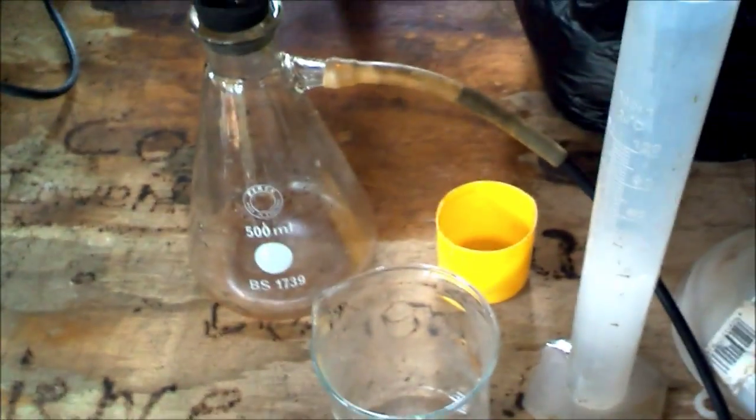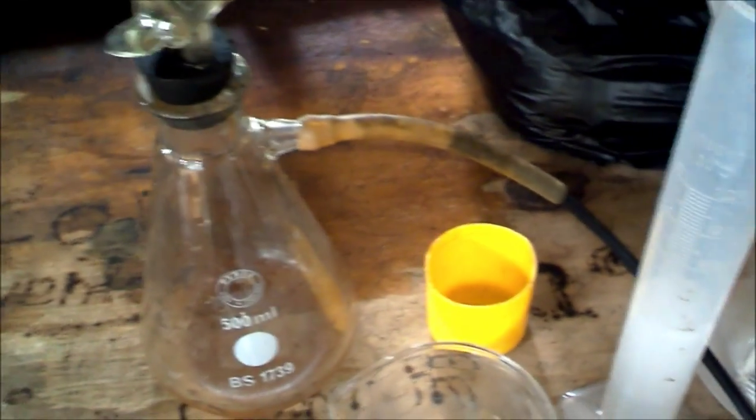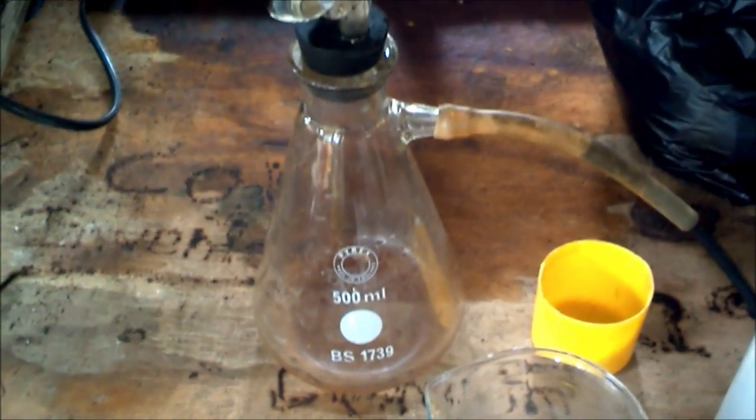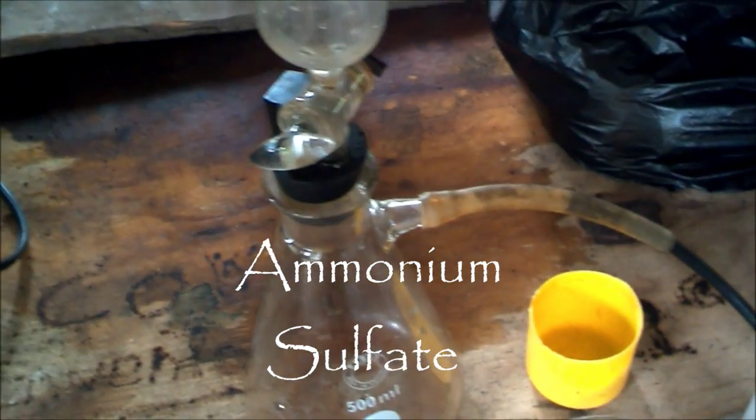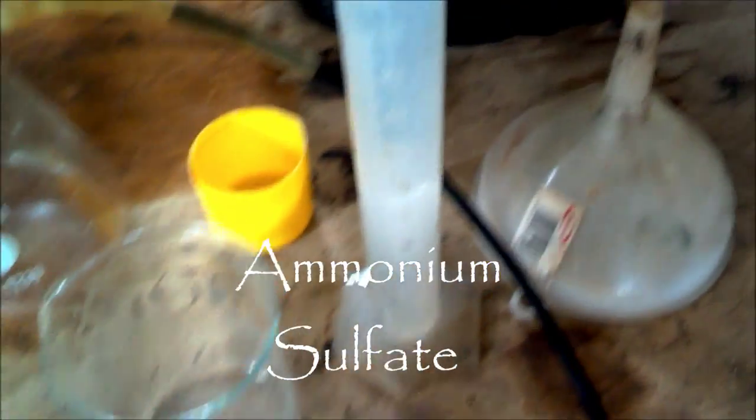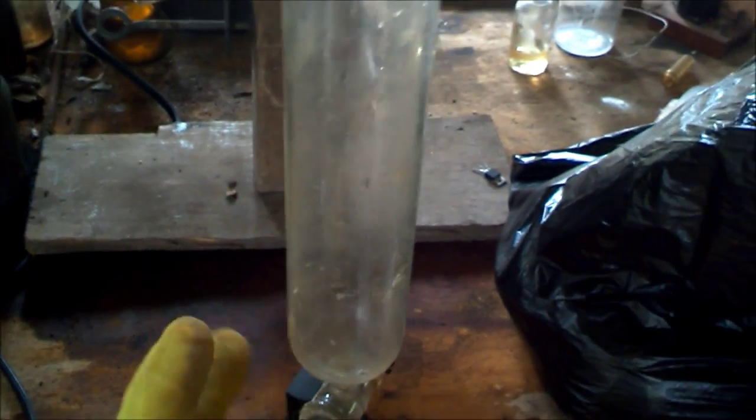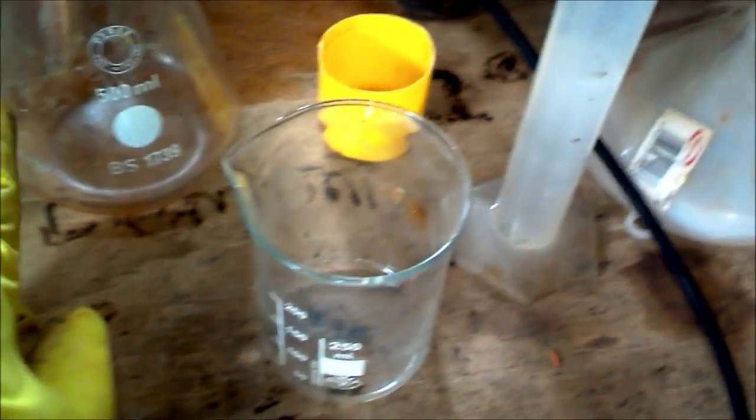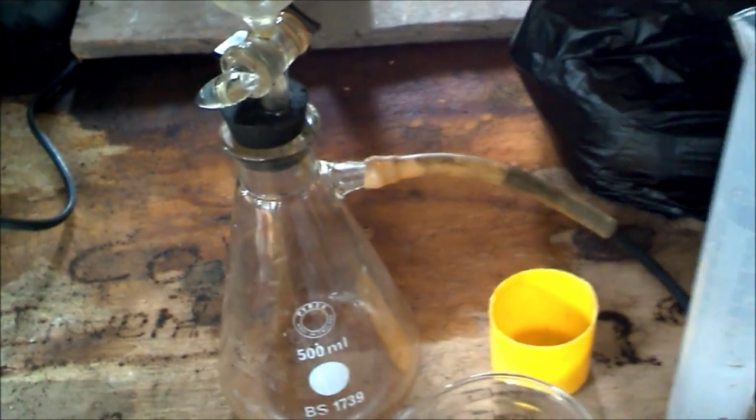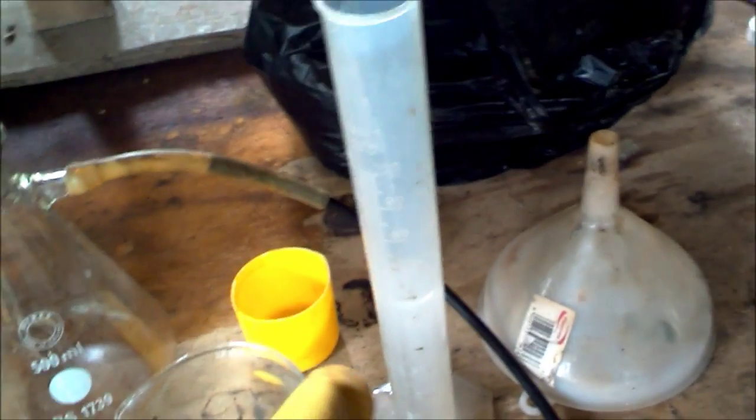Hello guys, today I'll be making ammonia. For this process you need an ammonium salt, but today I'll be using ammonium sulfate since it's readily available in fertilizers. You need a funnel that you can adjust the flow rate of, a flask, a vacuum flask, a measuring cylinder, and a beaker to weigh out the sodium hydroxide.